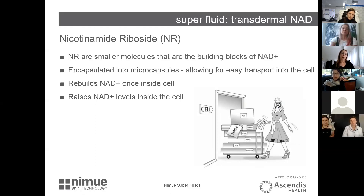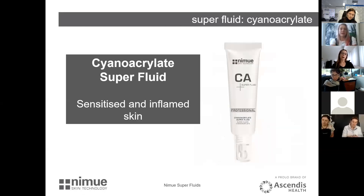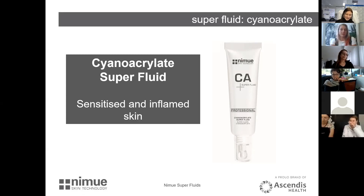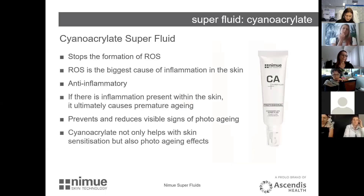As far as I know, NIMU is one of the only ranges that uses this. We have a patent on it. CA — cyanoacrylate — I call it CA. This is for sensitized and inflamed skin, and I want you to think of inflammation from free radicals. What it does is calm the skin and neutralize reactive oxygen species. On sensitive skin, reactive oxygen species wreak havoc causing redness and inflammation, but everybody is under attack from them.